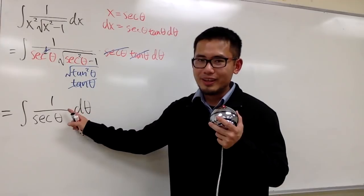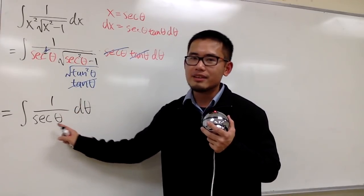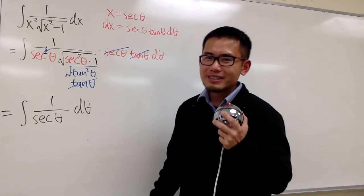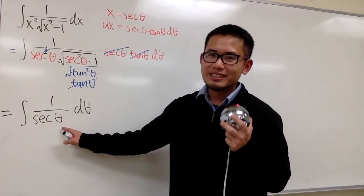And now, how can we integrate 1 over secant theta? This question can be easy, or it can be hard. The hard part is that you didn't see the easy part, because what's secant?